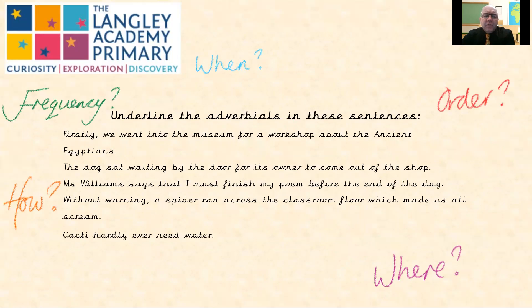So we've got a few sentences here — I'd like you to underline the adverbials. I've just reminded you of five types around the screen: frequency (how often), when, the order, where, and how. The sentences are: 'Firstly, we went into the museum for a workshop about the ancient Egyptians.' 'The dog sat waiting by the door for its owner to come out of the shop.' 'Miss Williams says that I must finish my poem before the end of the day.' 'Without warning, a spider ran across the classroom floor, which made us all scream.' And 'Cacti hardly ever need water.'